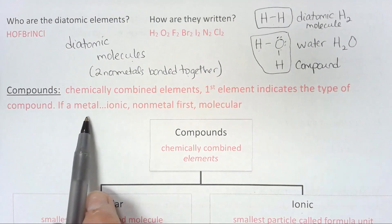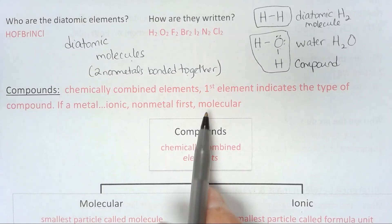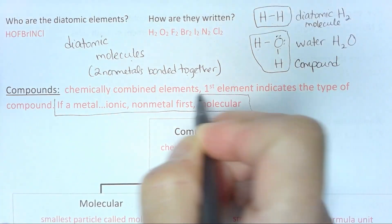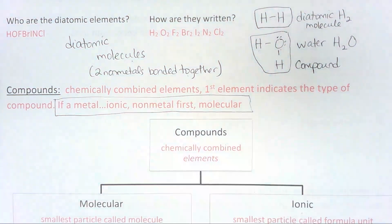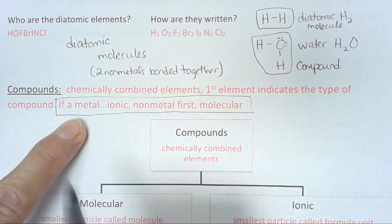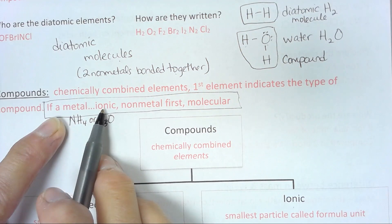The first element indicates the type of compound. If the first element is a metal, then it will be an ionic compound. If it is a non-metal, then it's a molecular compound. If I can stress to you anything that is important in understanding nomenclature, it's that right there.